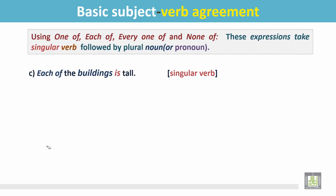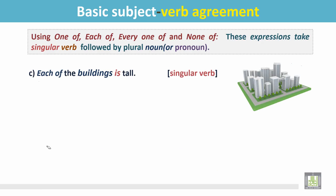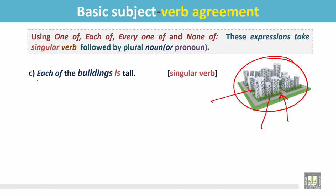Example C: Each of the buildings is tall. In the picture there are many buildings, and each of the buildings is tall. The sentence begins with each. There is a plural noun, buildings, but this plural noun is followed by a singular verb, is.